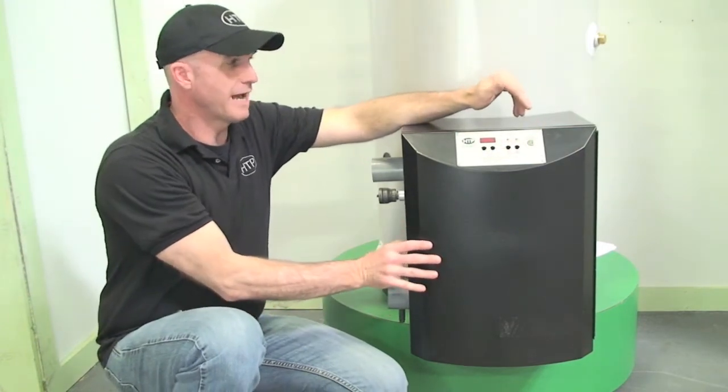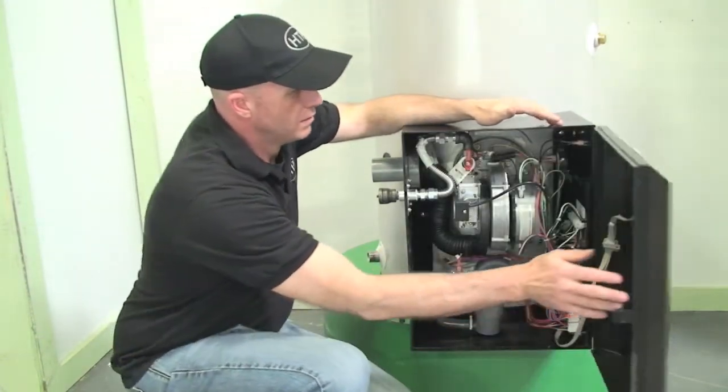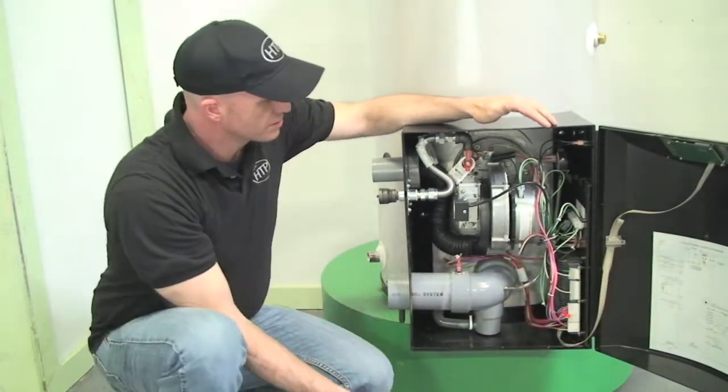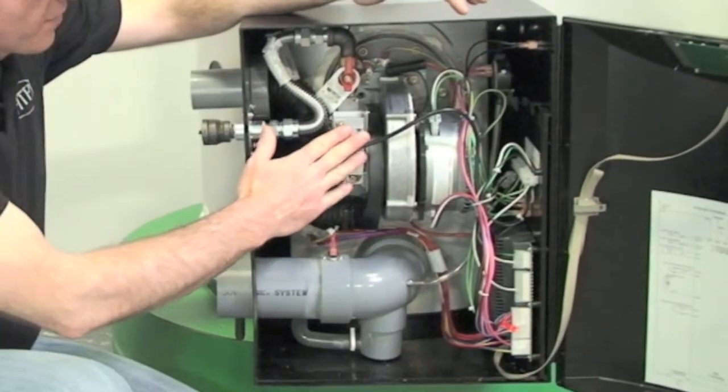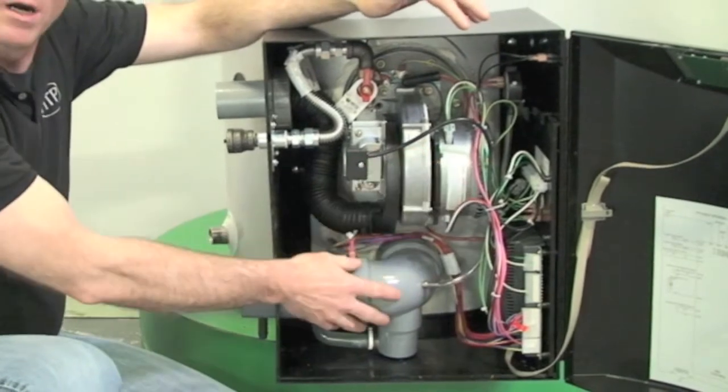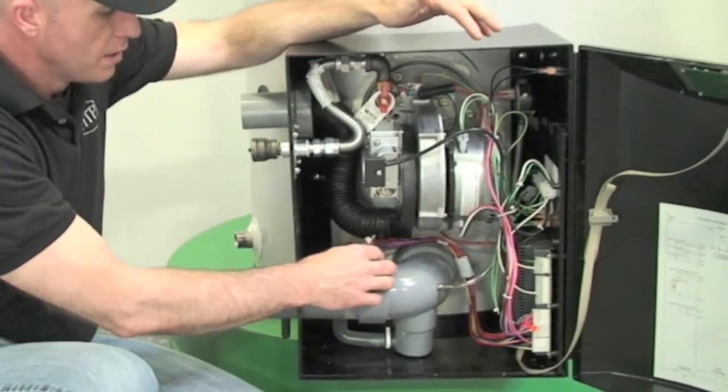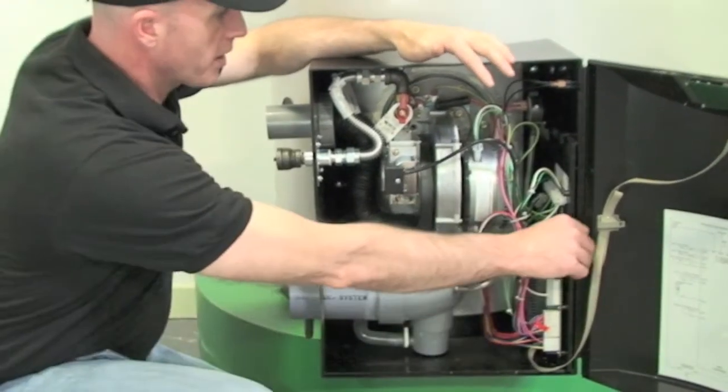When we open up this front cabinet, we can see some of the main components. We have a gas valve, our blower motor, our exhaust outlet assembly, some safeties, and our electronic control.